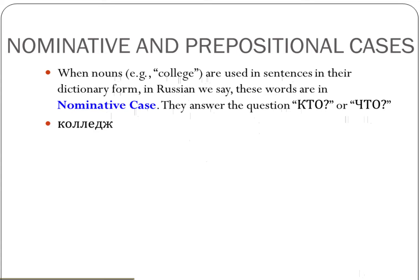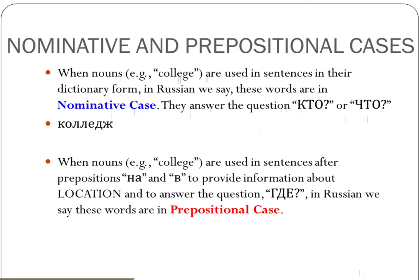So, for example, колледж. When we take nouns — people, places, things — and use them in sentences after prepositions на, meaning something like 'on', or в, meaning 'at' or 'in', to provide information about place and location, and to answer the question где (where), in Russian we say these words are in prepositional case — after a preposition. Easy to remember.